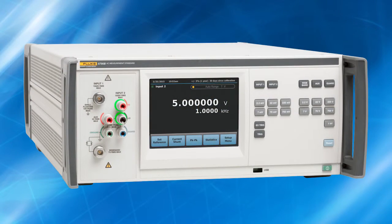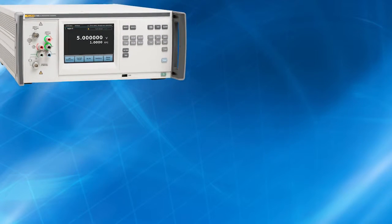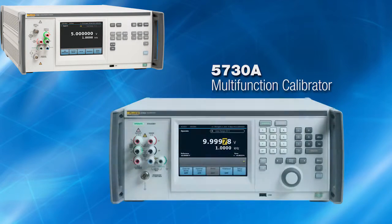The 5790B is designed to meet the complete AC voltage and wideband verification requirements of the Fluke Calibration 5700 series multifunction calibrators including the 5730A, the 5720A and the 5700A.